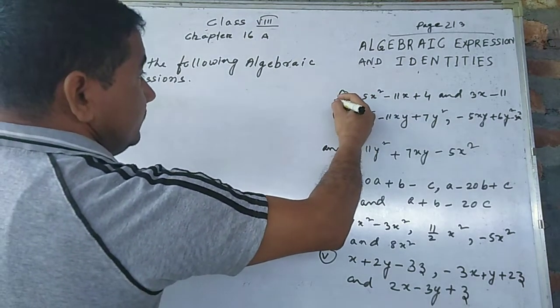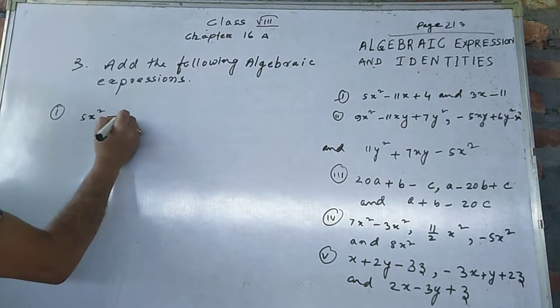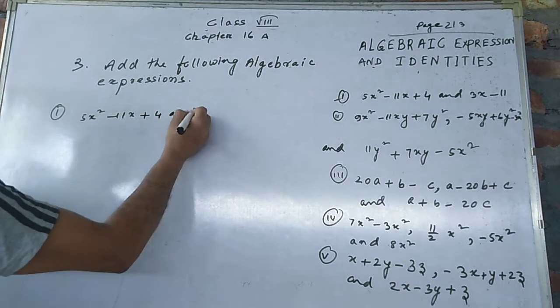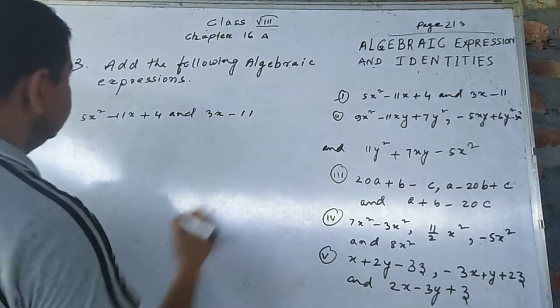Number 1: 5x² minus 11x plus 4 and 3x minus 11. We are given polynomial B: 5x² minus 11x plus 4.